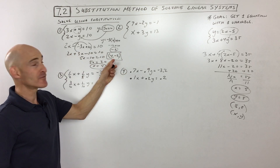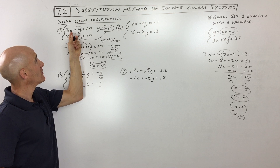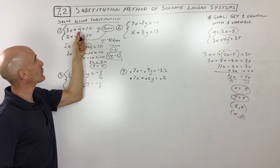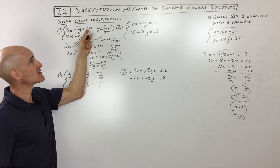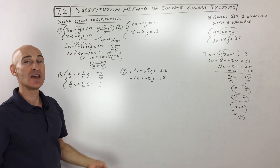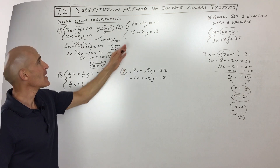If you're not sure if you got it right, you can put 4 in for x and negative 2 in for y, and make sure it makes this equation true. Same thing here — make sure it makes that equation true. If it does, you know you've got the right answer.